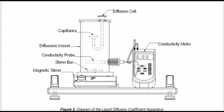Then press the on button on the conductivity meter. Put the stirrer bar into the diffusion vessel, switch on the magnetic stirrer, and set the speed knob to 200 RPM. Then read the conductivity value — distilled water shall give a constant reading. Stop the magnetic stirrer. The equipment is now ready for the experiment.